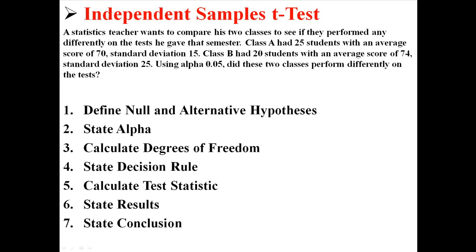So we have seven steps in an independent samples t-test. First we will state the hypotheses, then we'll state the alpha. We're going to calculate the degrees of freedom, state the decision rule, calculate the test statistic, state the results, and then state the conclusion.